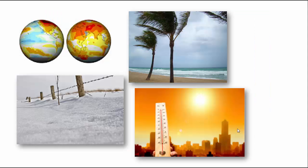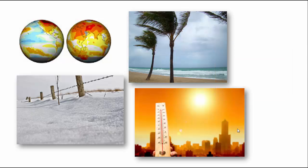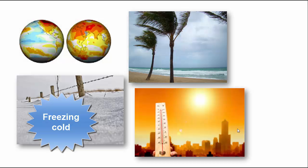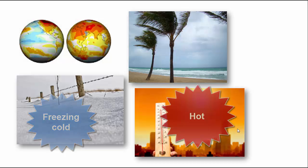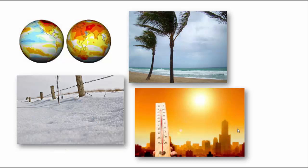The heating of the surface of the Earth and the atmospheric circulation are responsible for a lot of how you interact with the atmosphere every day — your local climate, wind patterns, and temperature. Global circulation patterns can determine whether you are freezing cold or hot, and whether you live in the tropics or the desert.